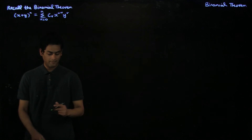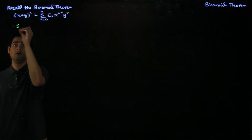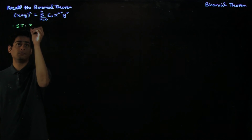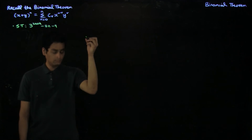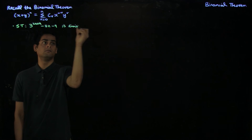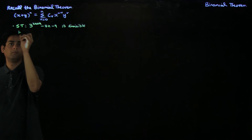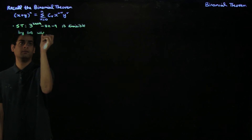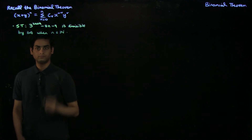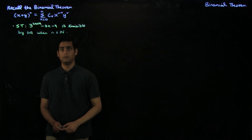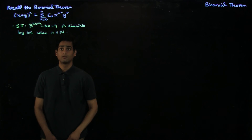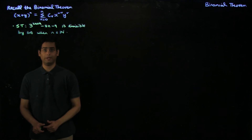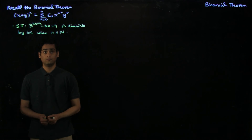To give you a flavor of the kind of results we'll be looking at today, let's look at the first example, which asks you to show that 3 power 2n plus 2 minus 8n minus 9 is divisible by 64 when n is a natural number. At first sight, there doesn't seem to be a binomial expansion you can apply to generate this result, so we would like to create a binomial expansion to derive this result.